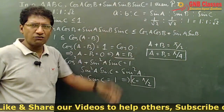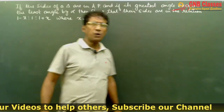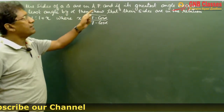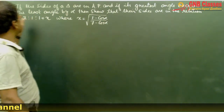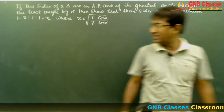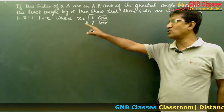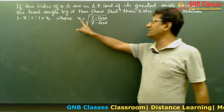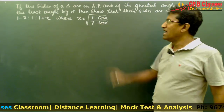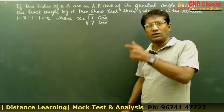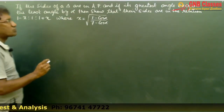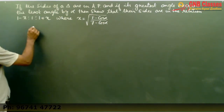In the next problem, if the sides of a triangle are in AP and if the greatest angle exceeds the least angle by α, show that the sides are in the relation (1-x):1:(1+x), where x = √[(1-cosα)/(7-cosα)]. Let me write down the given conditions.